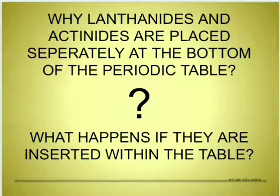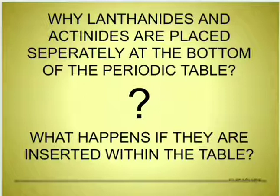Hello everyone. In our previous videos we have discussed about the modern periodic table and how the elements are arranged in it. Now in this video, let us understand why lanthanoids and actinoids are placed separately at the bottom of the periodic table, and what happens if they are inserted within the table. For this, we need to look into the periodic table and compare it with the version that includes the F block elements in the main table.